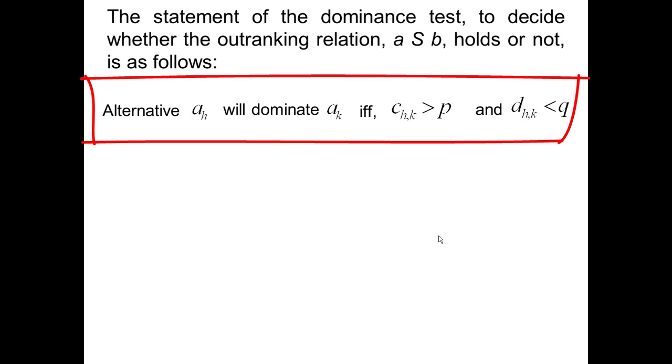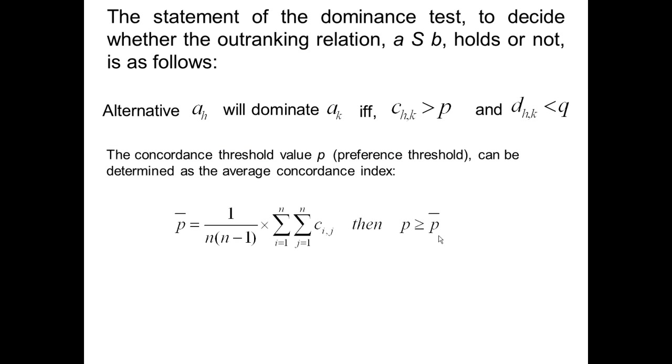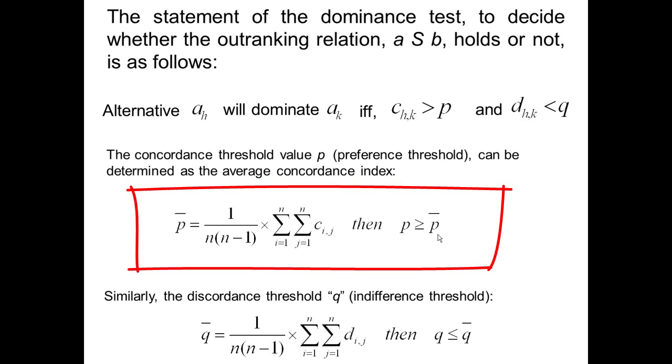The concordance threshold value P, about which the decision-maker is sure to offer strict preference, is also known as the preference threshold. It must be defined by the decision-maker as high as possible, or it can be determined as the average concordance index, as given here. Then the preference index P must be selected as greater than or equal to the average.